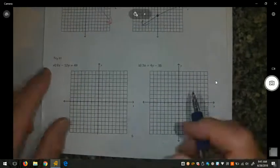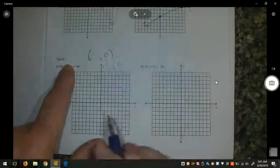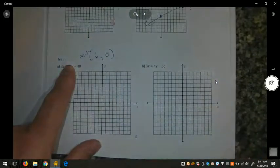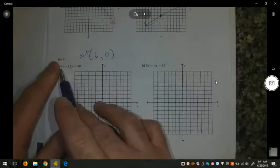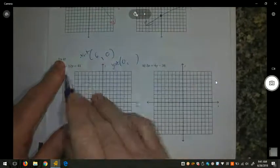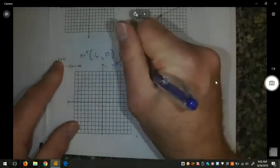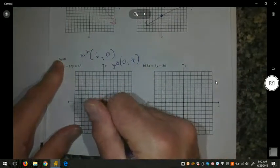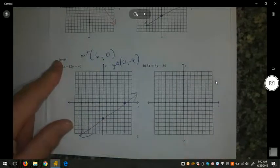Alright, if you did this correctly, when you plugged in 0 for y, 48 divided by 8 is 6. So your x-intercept should have been 6, 0. When you plug in 0 for x to find the y-intercept, 48 divided by negative 12, make sure you keep the sign with it, divided by negative 12 is negative 4. So we have 6, 0, and 0, negative 4 for our x and y-intercepts, and they form a line.